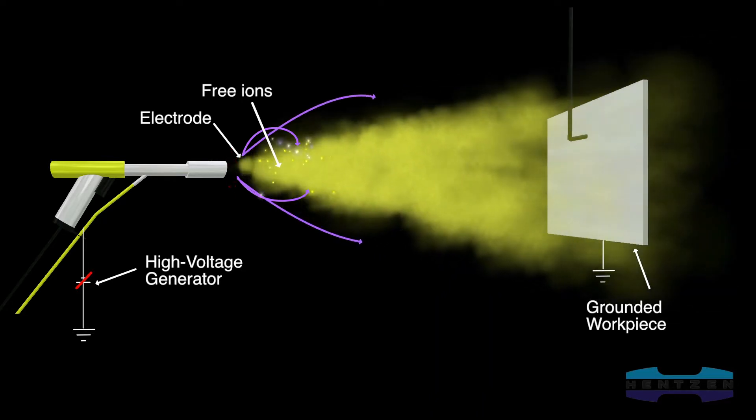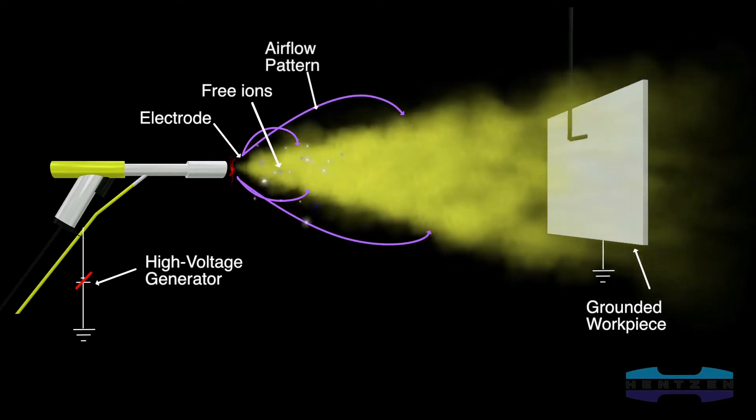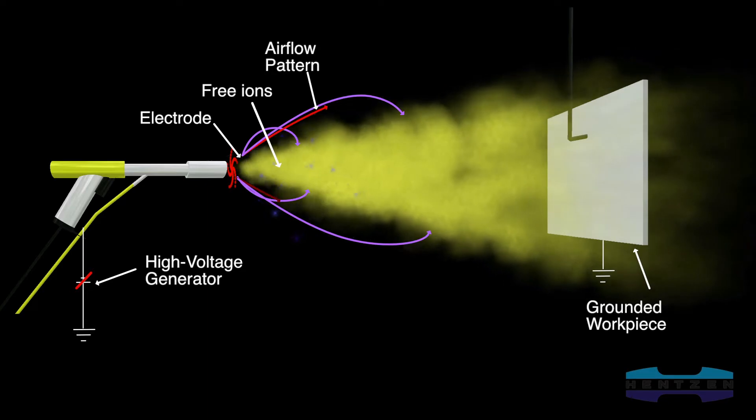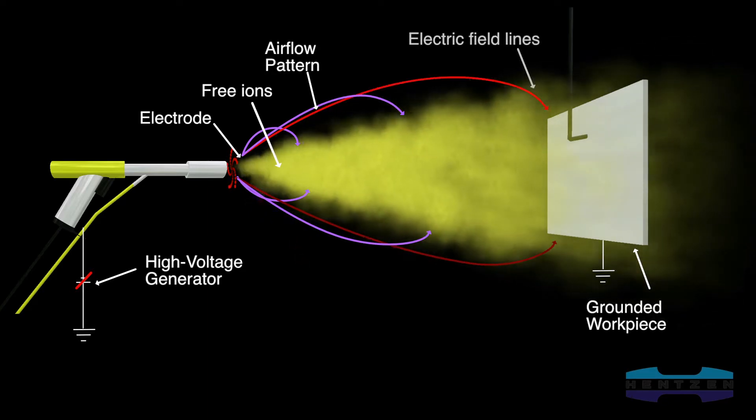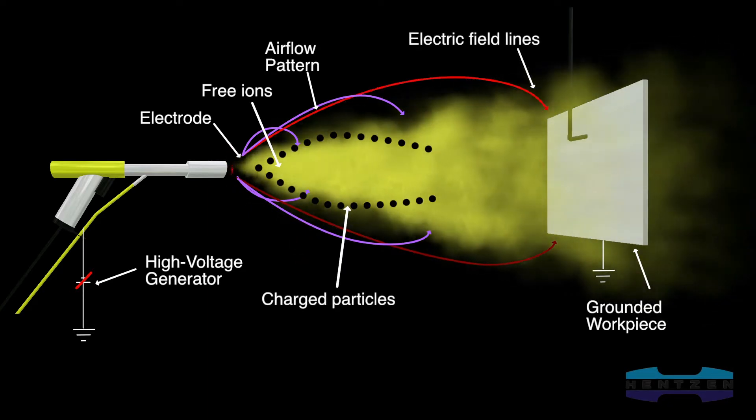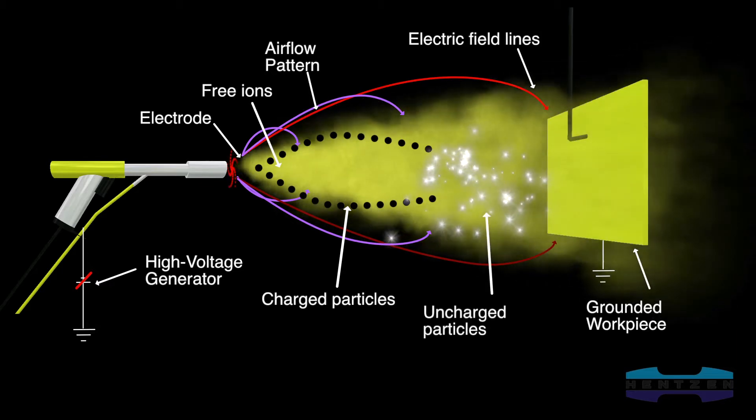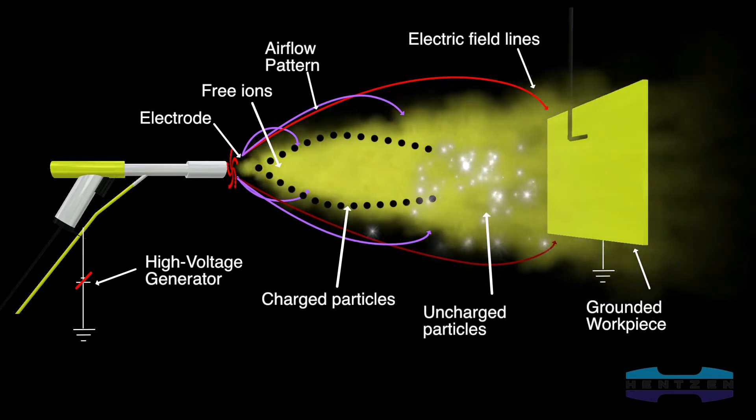Corona discharge is a type of cold plasma that results in large number of electrons produced in the corona area and injected into the space between the gun and part. These electrons attach themselves to air molecules, thereby creating negatively charged ions.